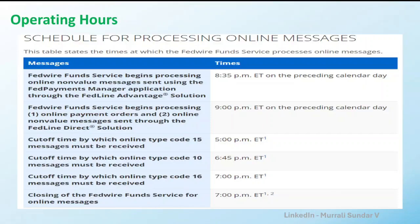At this moment, Fedwire uses a message format called FIAM, which is a proprietary message format. Each transaction type is identified using a code. Code 15 is for special account messages, Code 10 is for customer account transfers, and Code 16 is for bank-to-bank transfers. Once all transactions are completed at 7 o'clock, Fedwire stops its operation and begins again at 9 PM.